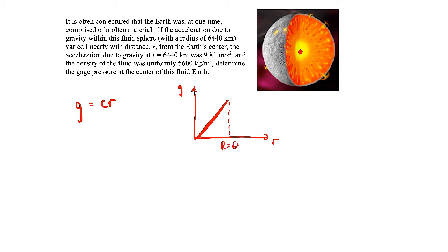And we know that when R, capital R, is equal to 6440 kilometers, gravity is 9.81 meters per second squared. So to find the constant C, which is just the slope here, we'll just base it on that boundary condition. G at radius capital R over capital R.